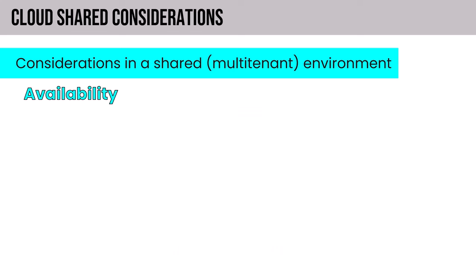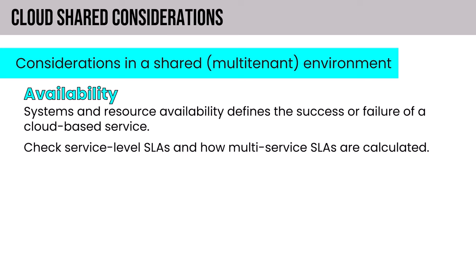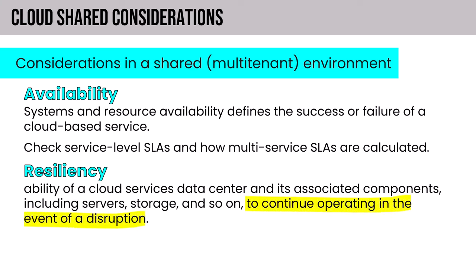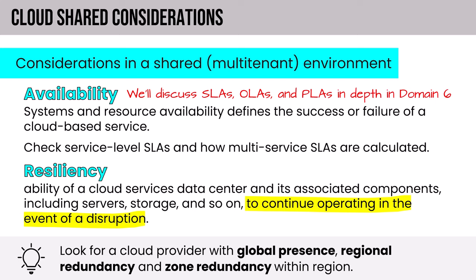Availability: systems and resource availability defines the success or failure of a cloud service. You want to check service level SLAs and how multi-service SLAs are calculated. Resiliency is the ability of a cloud service data center and its associated components — server, storage, and so on — to continue operating in the event of a disruption. Look for a cloud provider with global presence, regional redundancy, and zone redundancy within that region. When it comes to availability, we'll talk about SLAs, OLAs, and PLAs — service level agreements, operating level agreements, and privacy level agreements — in depth in domain six.